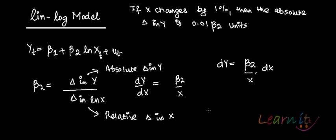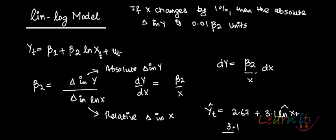Suppose you have the model: y-hat-t equals 2.67 plus 3.1 times log of x-t. How do you interpret the beta 2 coefficient? You will say that if x changes by 1%, then y changes by 3.1 divided by 100 units. You won't write it as percent because there is no log with y. So if x changes by 1%, then y changes by 3.1 upon 100 units.